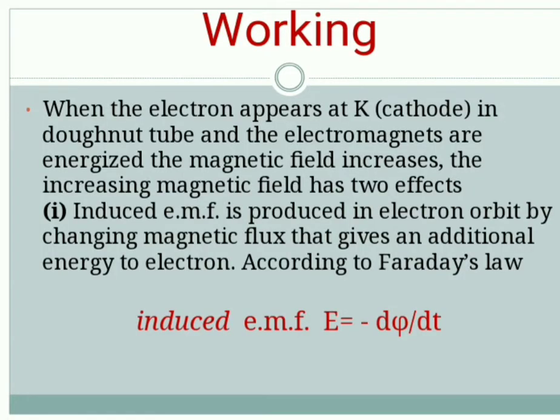Next, we are going to see the working part of Betatron. When the electron appears at cathode K in the doughnut tube and the electromagnet gets energized, it increases the magnetic field. Due to this, two effects take place. The first one is induced EMF is produced in the electron orbit by changing magnetic flux that gives additional energy to the electron. This can be explained using Faraday's law, in which induced EMF is proportional to the varying flux. That can be written as E equals minus dΦ/dt.